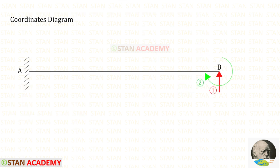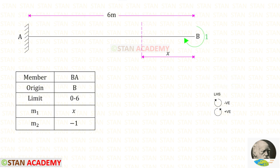Now let us find M2. Our second coordinate is MB, which is a moment, so we apply a unit moment. We kept MB in the clockwise direction, so we apply the unit moment in the clockwise direction. Up to the section we have only the unit moment acting clockwise, so M2 = -1.